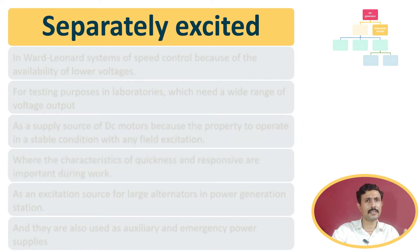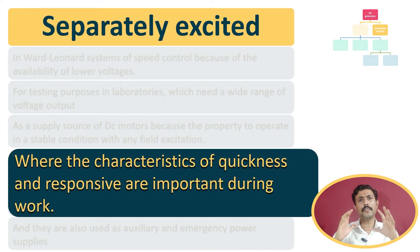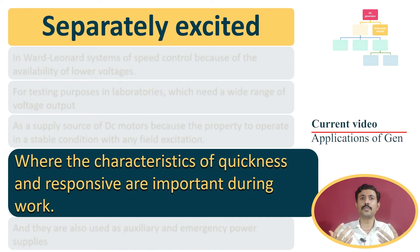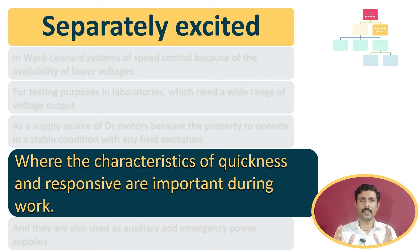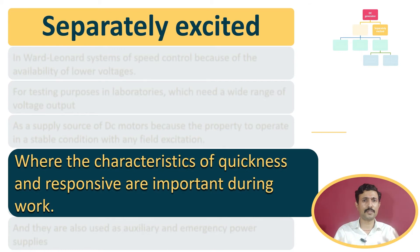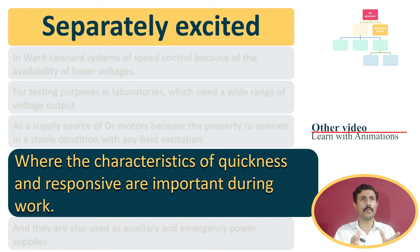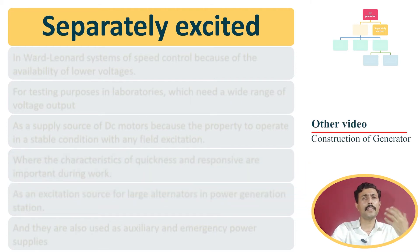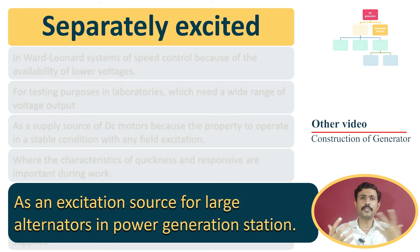The next application is based on its fast response. The response of this DC generator is very fast, and that is why it is used where quick responsiveness is required. Where quickness and responsiveness are most important, this type of generator is used.